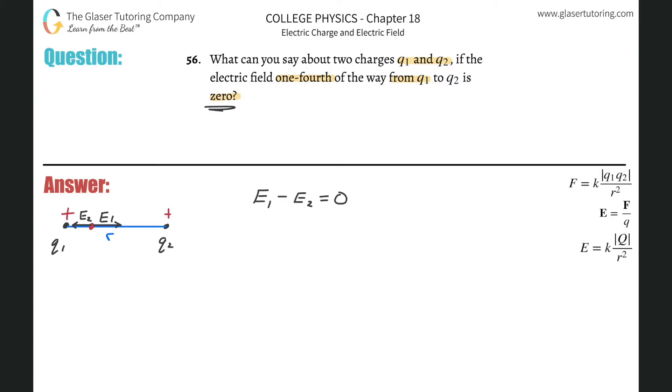Okay, so now I also know that this point here has to be one-fourth of the way away from q1. So I basically know that if this whole thing, I call this whole thing r, then I know, let me just erase that for a second, then I know that the distance between q1 and the red point is going to be one-fourth of r.